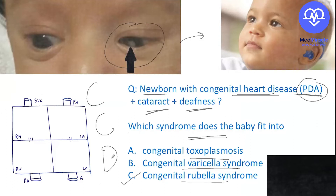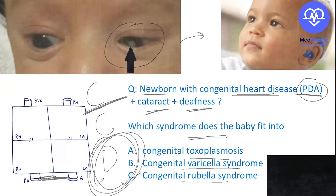In congenital rubella syndrome (CCD mnemonic), the most common congenital heart disease is patent ductus arteriosus — between the pulmonary artery and descending aorta, not the ascending aorta. Three questions covered: the triad of congenital rubella syndrome is CCD; the most common congenital heart in congenital rubella syndrome is PDA; and the most common manifestation in CCD is deafness.